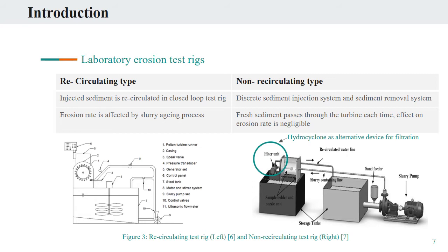Basically, laboratory erosion test rigs can be classified into recirculating type and non-recirculating type. In recirculating type, sediment is mixed with water in a tank and circulated throughout the test duration in a closed loop. In this case, the erosion rate increases at the beginning and then starts diminishing afterwards. This is due to the loss of angularity of the sediment after having continuous contact with the specimen, also known as the slurry aging process. Whereas in the case of non-recirculating type erosion test rigs, fresh sediment is fed into the system via independent sediment injection system, and used sediment after passing through the specimen is ejected out of the system by sediment removal system like a sand filter, as shown in Figure 3.